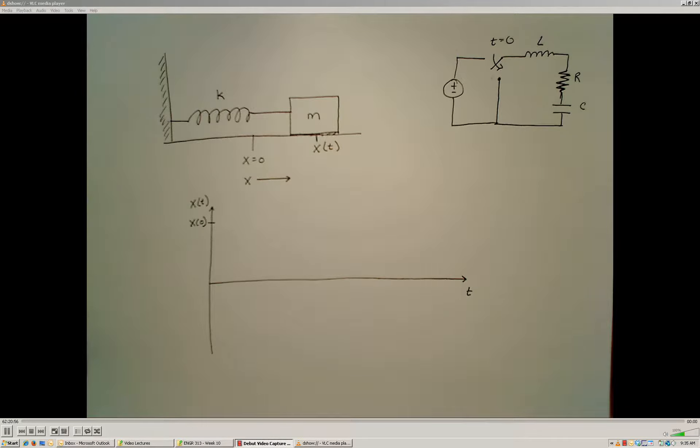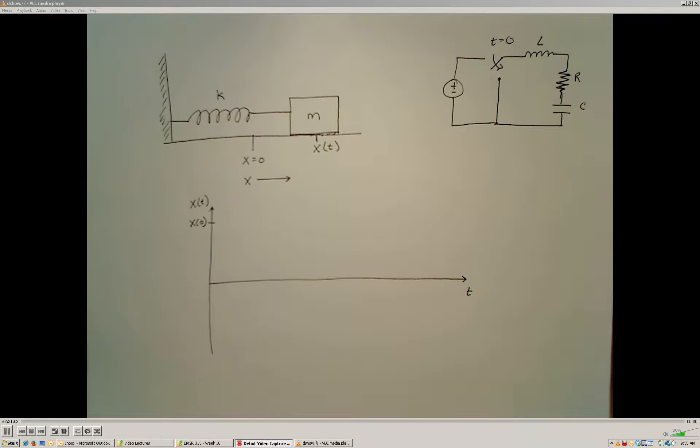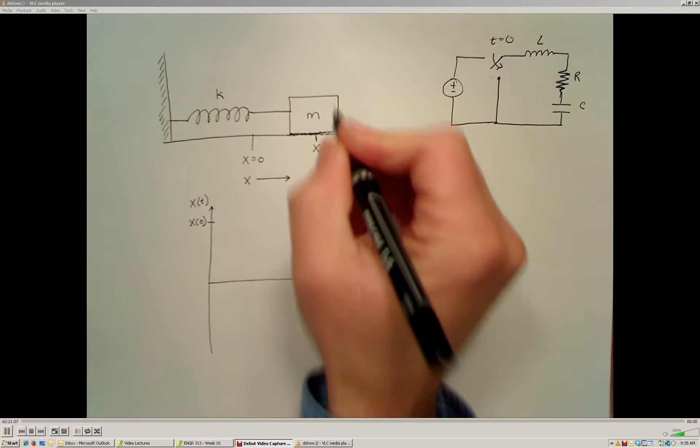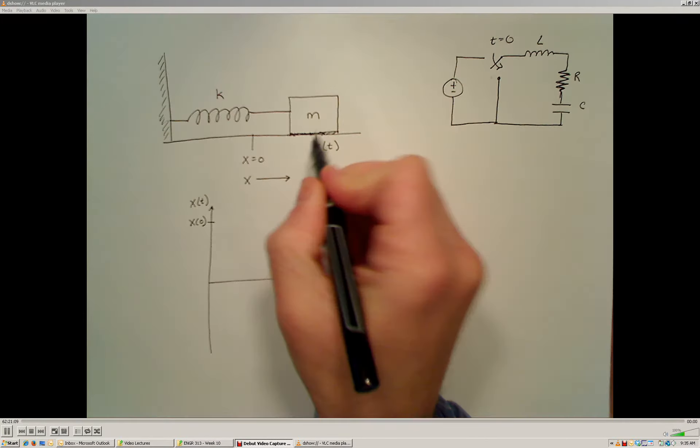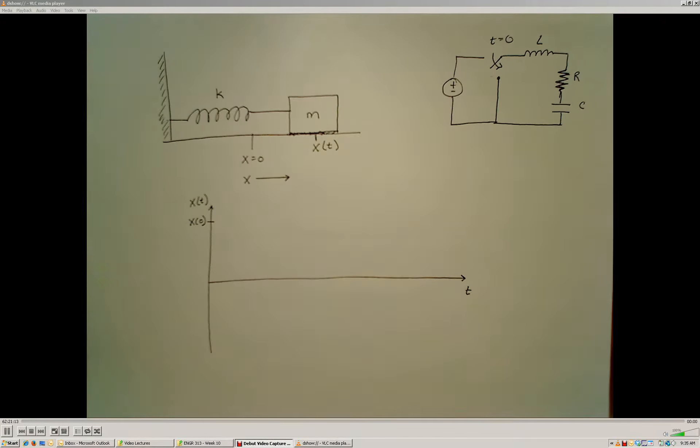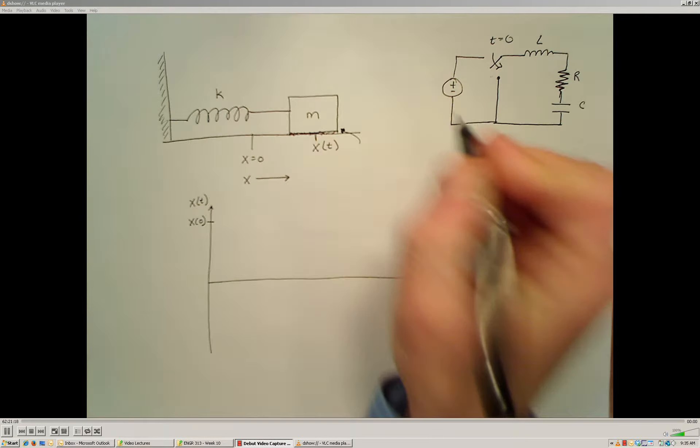We're going to begin our study by looking at a mechanical system that's comprised of a spring and a mass that's sliding on a surface with viscous friction. I want to point out that this sliding surface has a thin layer of oil or liquid on it.